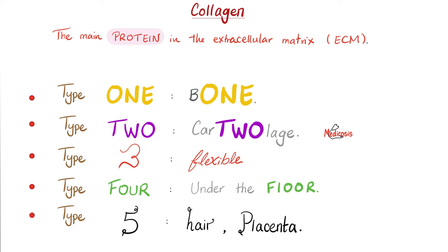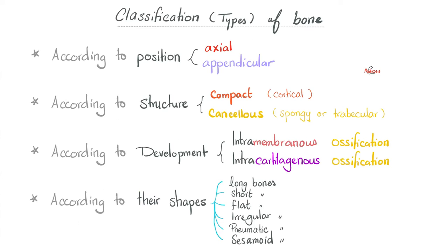Which type of collagen do we find in bones? Type 1, mostly — the strongest type. Now let's talk about the different types of bones based on their shape. We have long bones, short bones, flat bones, irregular bones, pneumatic bones, and sesamoid bones.